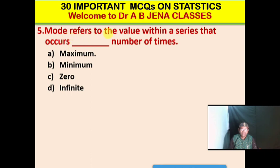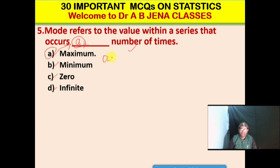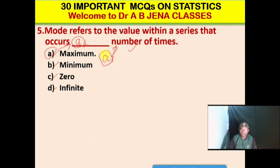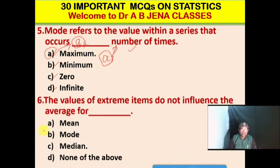Next MCQ: Mode refers to the value within a series that occurs dash number of times. A. Maximum. B. Minimum. C. Zero. D. Infinite. A is the right option. Mode refers to the value within a series that occurs the maximum number of times.